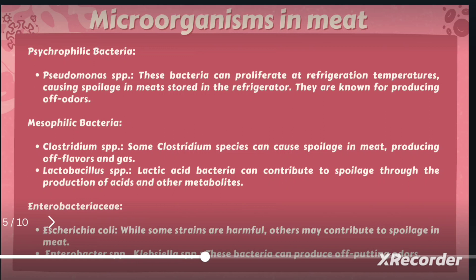In order to preserve meat, most people prefer refrigeration. However, certain pathogenic microorganisms also grow at psychrophilic temperatures. Some species can slowly proliferate at refrigerating temperatures, causing meat spoilage in the refrigerator, which can be monitored by changes in the texture and odor of the meat.